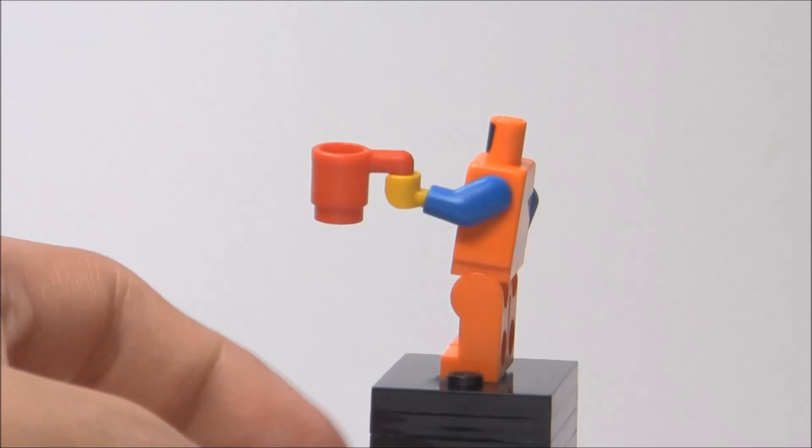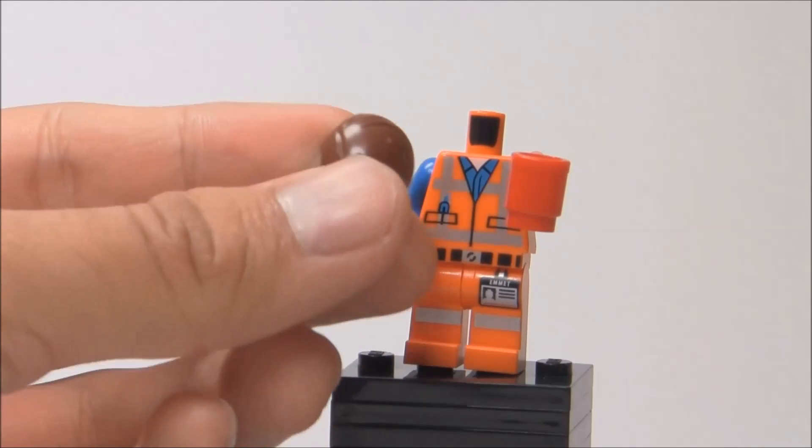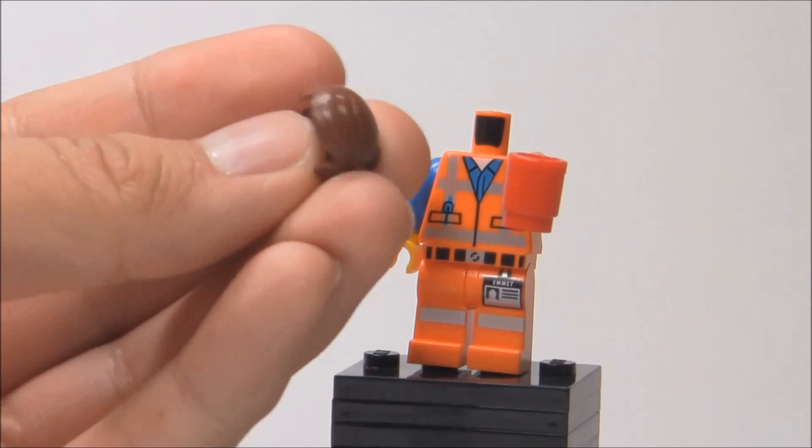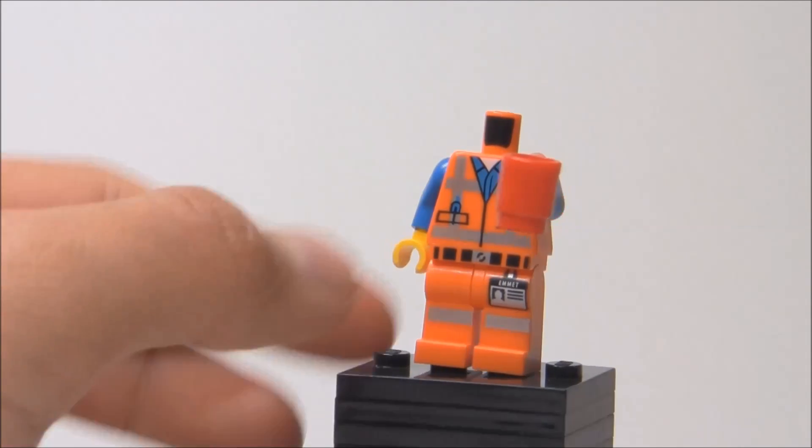And that's really it for the Emmett minifigure. I love his hairpiece, too, which you guys can see right here. Of course, this comes in all the sets that come with Emmett, besides the Collectible Minifigure series. But it's just such a great hairpiece. They really put a lot of effort into this. Now on to the set itself.